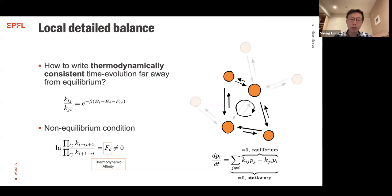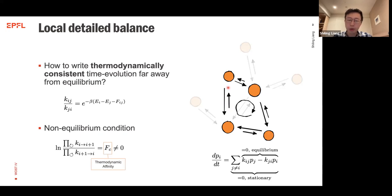What helps us write a thermodynamically consistent time evolution is the local detailed balance relation. This relation tells us that for transitions in biochemical systems — for example, given a transition between states — the forward transition rate divided by the backward transition rate should satisfy the local detailed balance relation, which is determined by the energy difference and the driving force along that transition.